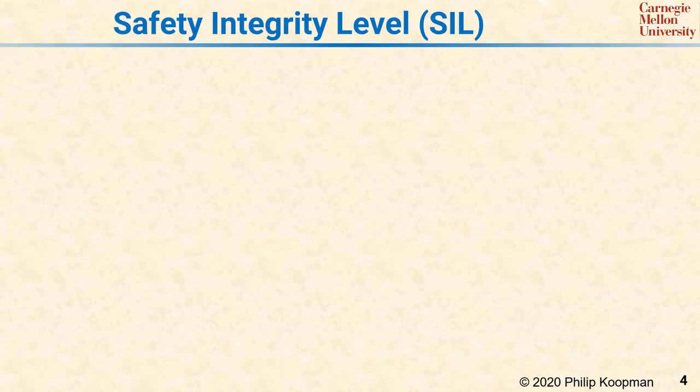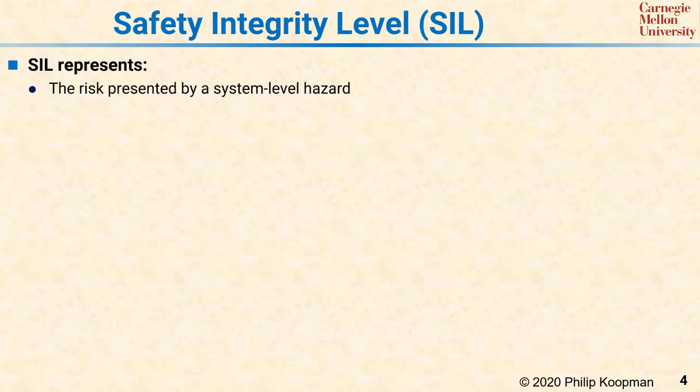The general strategy for building critical systems is to first define a Safety Integrity Level, or SIL, that is required and then use that SIL to guide the system design process. In practice, a SIL represents three related things. First, it represents the risk presented by a system level hazard, with a high SIL being considered extremely hazardous and a low SIL considered minimally hazardous.